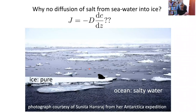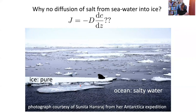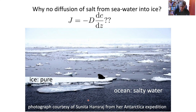We now know that Fick's law is not correct in the following respect. If you observe ice floating in seawater, the ice is pretty pure whereas the ocean contains a larger concentration of salt, and no matter how long you observe, there will be no tendency for the salt to diffuse into the ice even though the concentrations are very different. So clearly it's not obeying Fick's law — we have a concentration gradient and yet no change in composition. The reason is that diffusion flux depends not on the concentration gradient but on the chemical potential gradient.